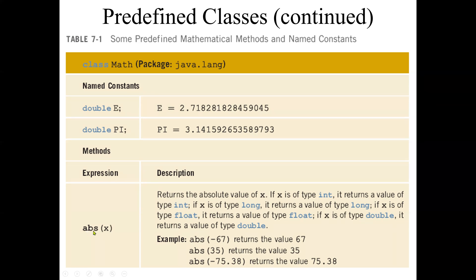The first method is abs, which stands for absolute. This finds the absolute value of x. Every method consists of an argument, or the parameter — called the formal parameter. We will discuss this further in our next lectures when we cover user-defined methods. The abs function is given to us — we don't need to write it. The abs function will return the absolute value of x, where x is our parameter and should be of type int. For example, the absolute value of negative 67 is 67.